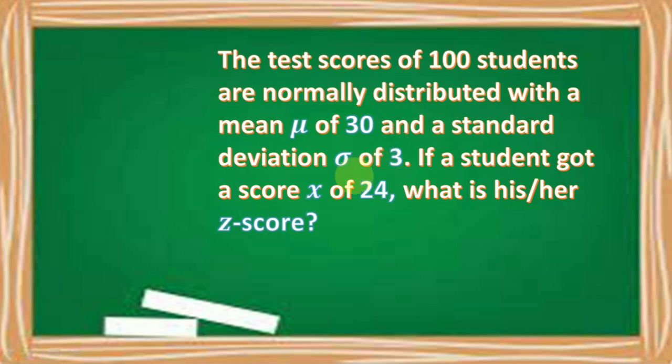The test scores of 100 students are normally distributed with a mean of 30 and a standard deviation of 3. If a student gets a score of 24, what is his or her z-score?